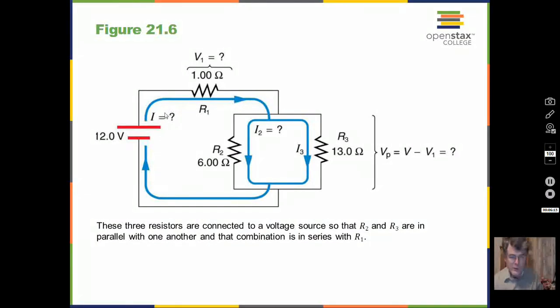Here's an example. We have a one ohm resistor, a six, and a thirteen. Which current is going to be the largest, i2 or i3? You should say i2, it's going through the smallest resistance, so it's going to have the largest current. You would combine these, get a single resistance here, add it with this one, calculate the current coming out of the battery, do the potential drops, and then you could calculate the individual currents i2 and i3.